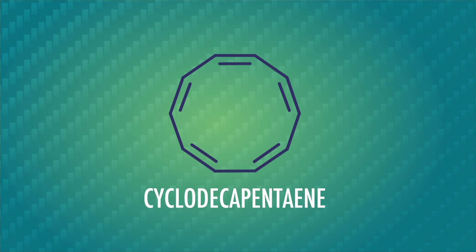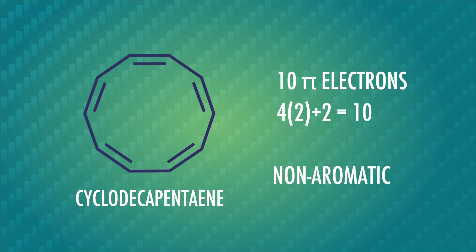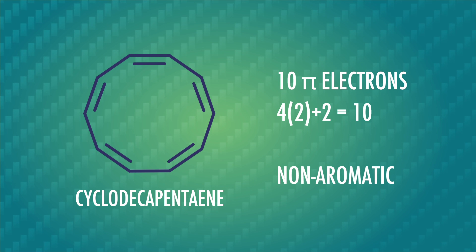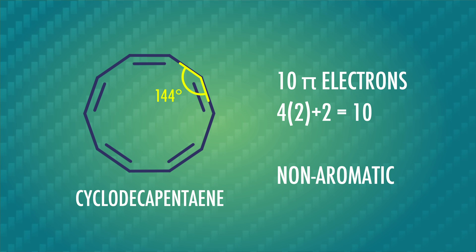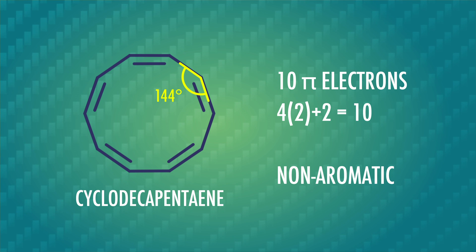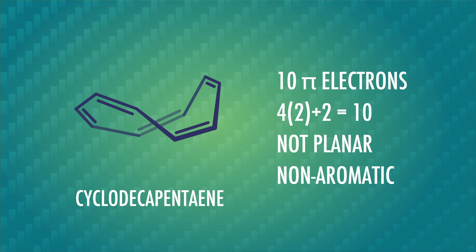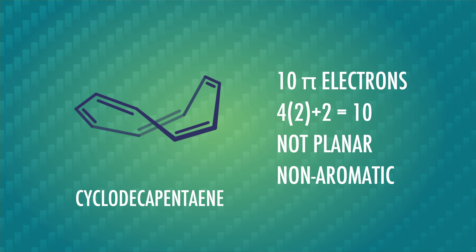We've looked at lots of aromatic compounds, but plenty of cyclic compounds don't quite make the cut. For example, cyclodeca-pentaene follows Huckel's rule with 10 pi electrons, but it's not aromatic. If it were planar, a 10-membered ring would have 144-degree angles, which is much larger than the comfy 120-degree angles of sp2 hybridized carbons. So this ring puckers to become non-planar, breaking the overlap between the p orbitals — no conjugation, no aromaticity. There are also some cyclic, planar, conjugated compounds that don't follow Huckel's rule.